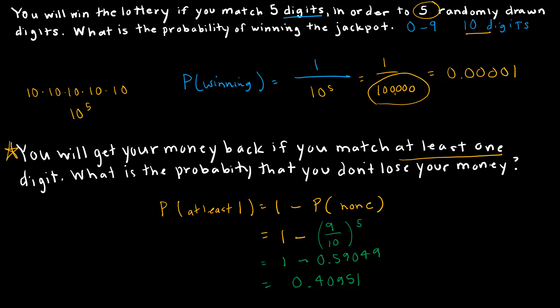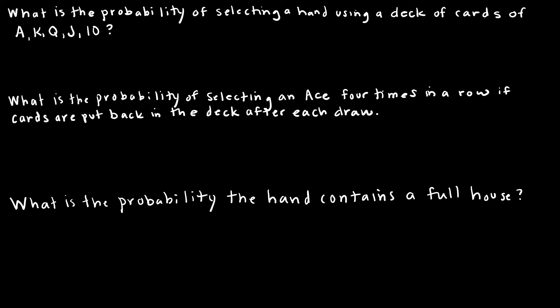That means I totally made up this question because no lottery would do that. Now I want to take a look at a couple of cards questions, and I'm going to show you a couple of different ways to think about it. The first question has to do with the probability of selecting a hand of ace, king, queen, jack, 10 from a deck of cards.